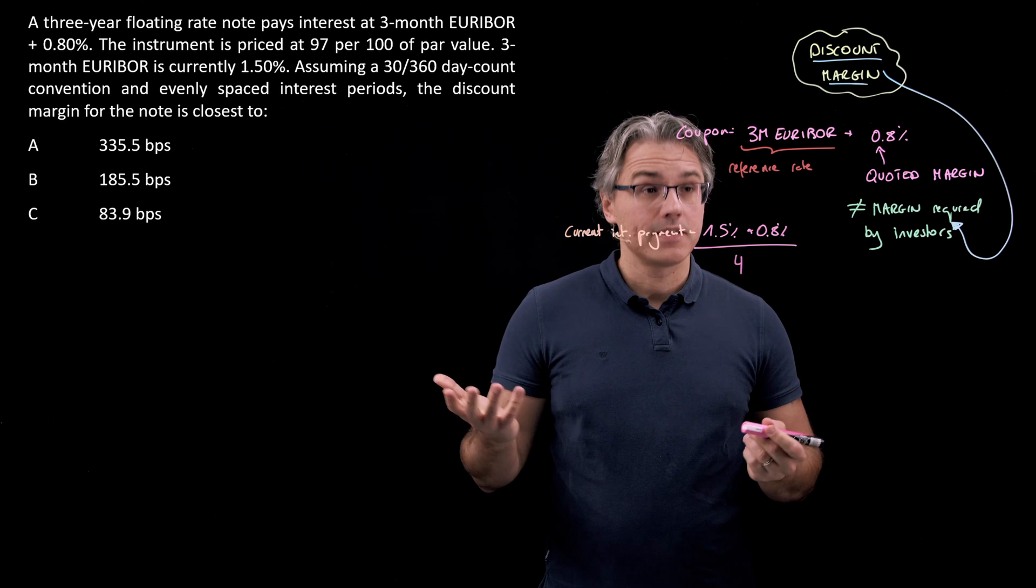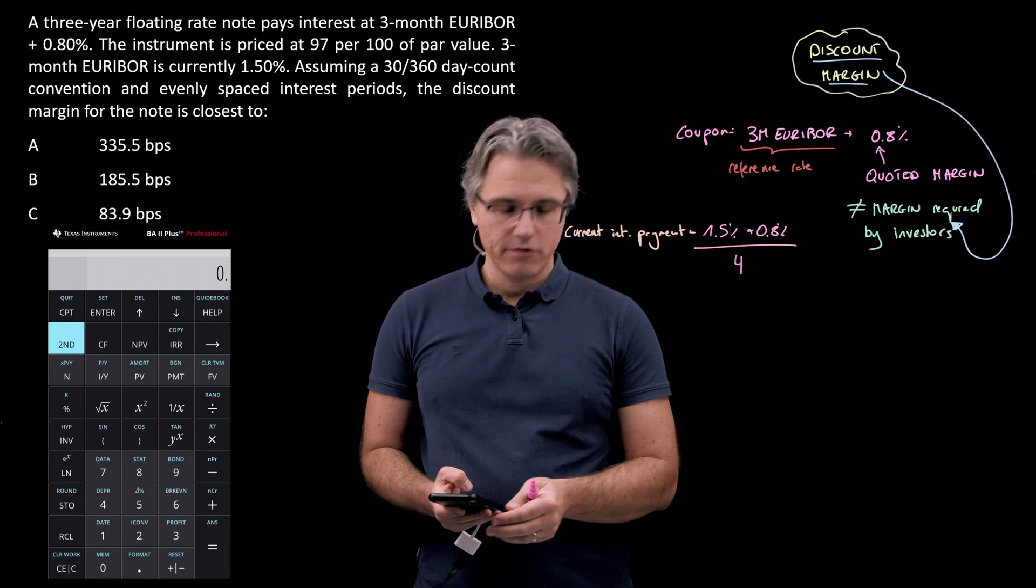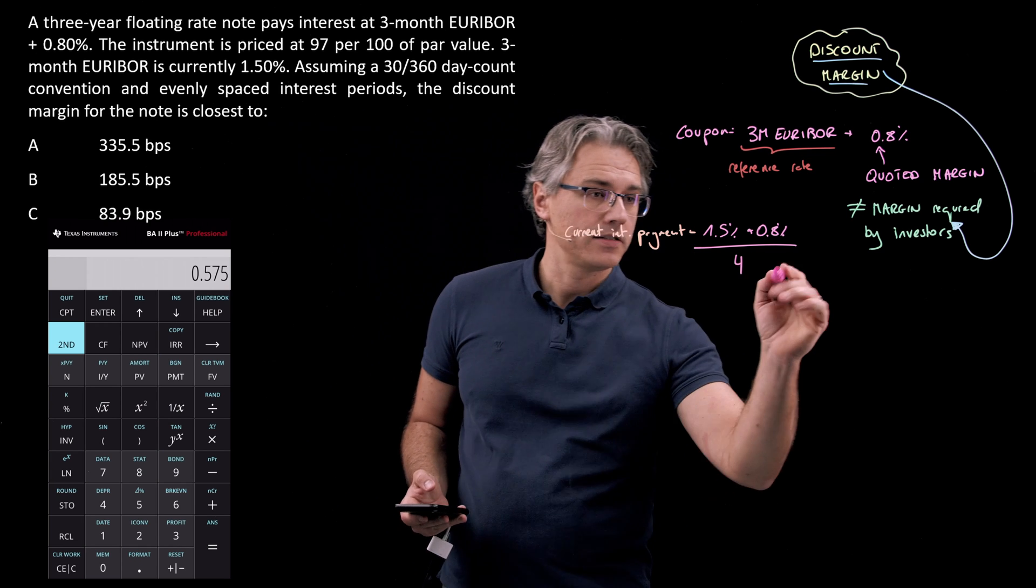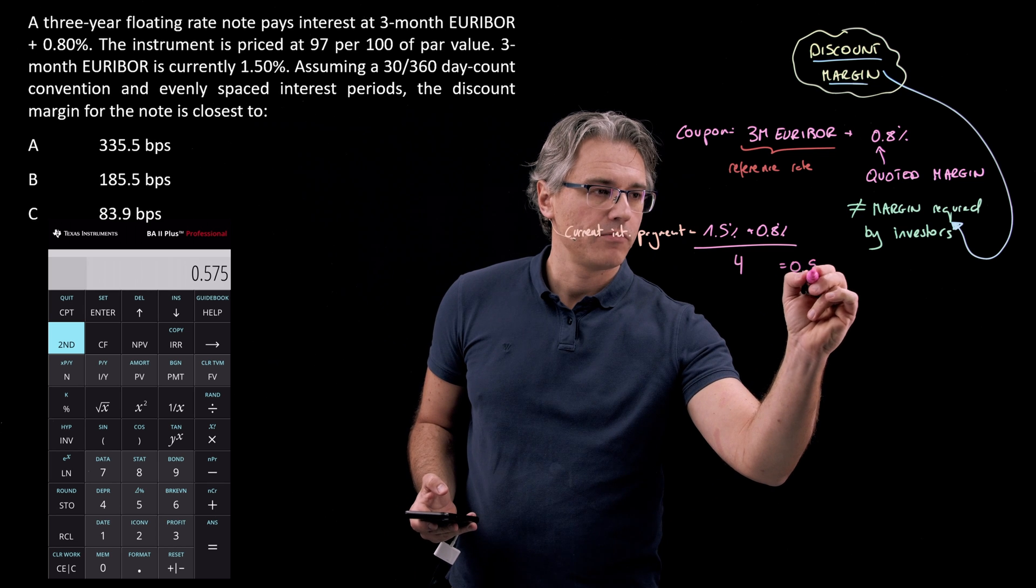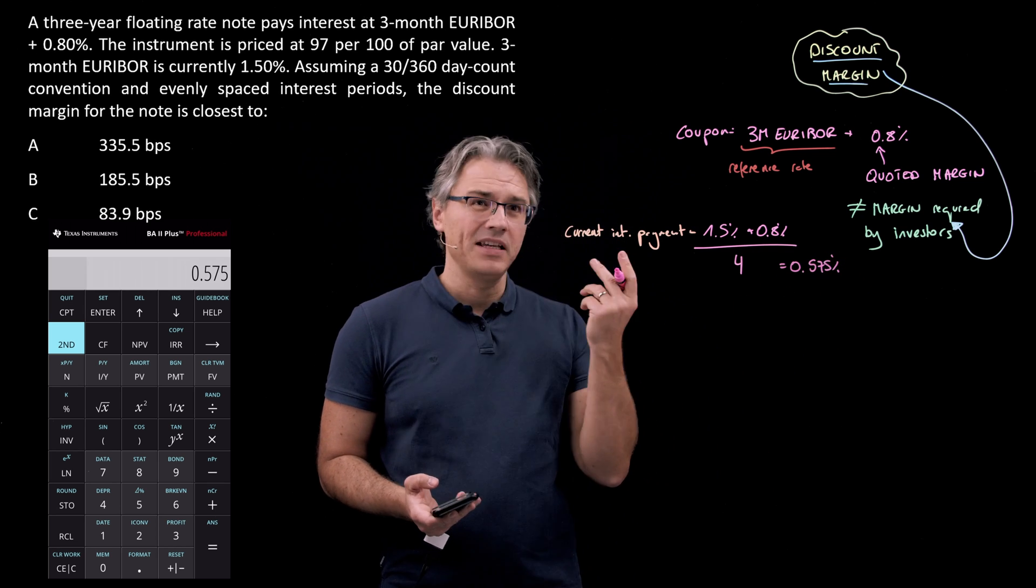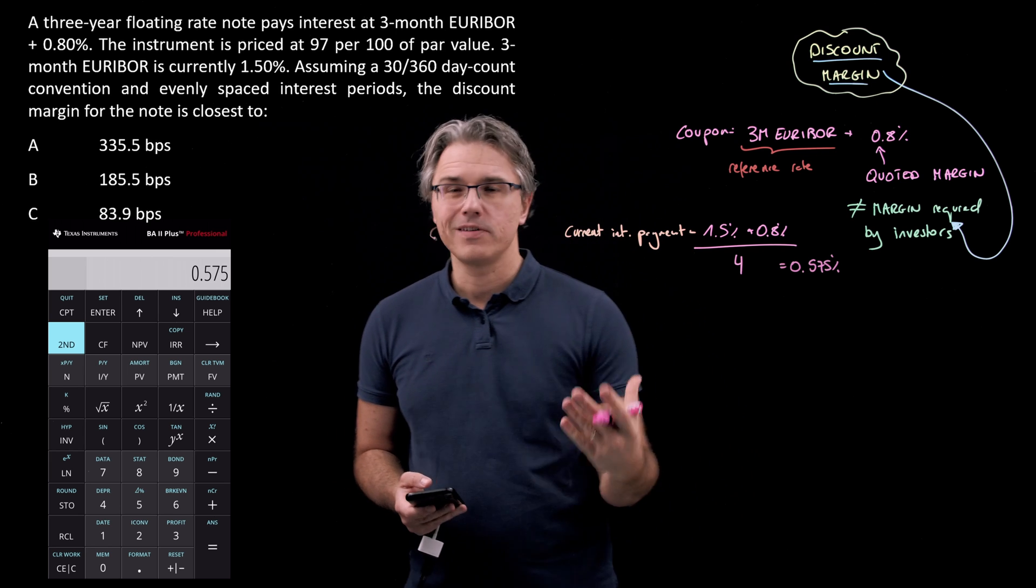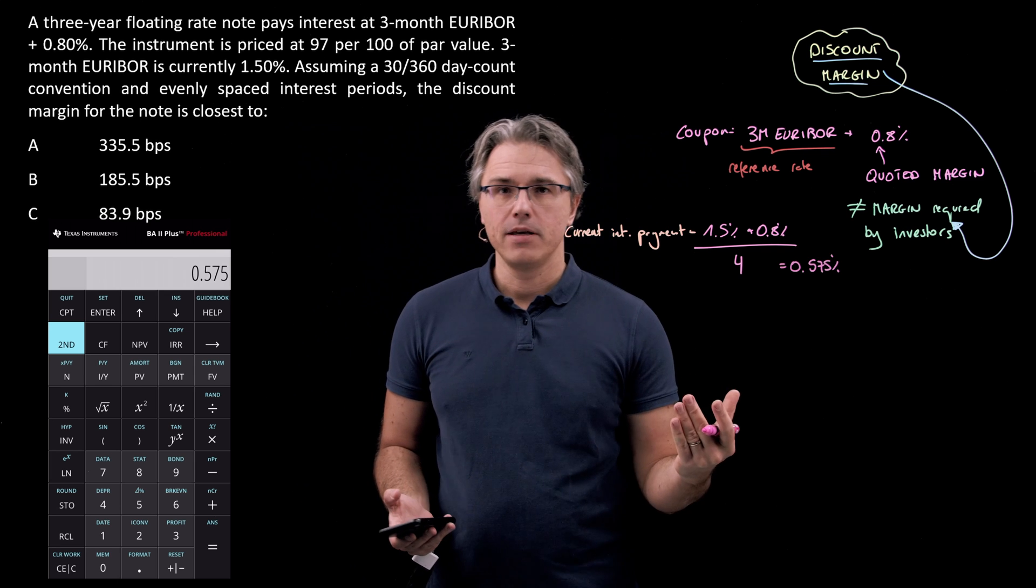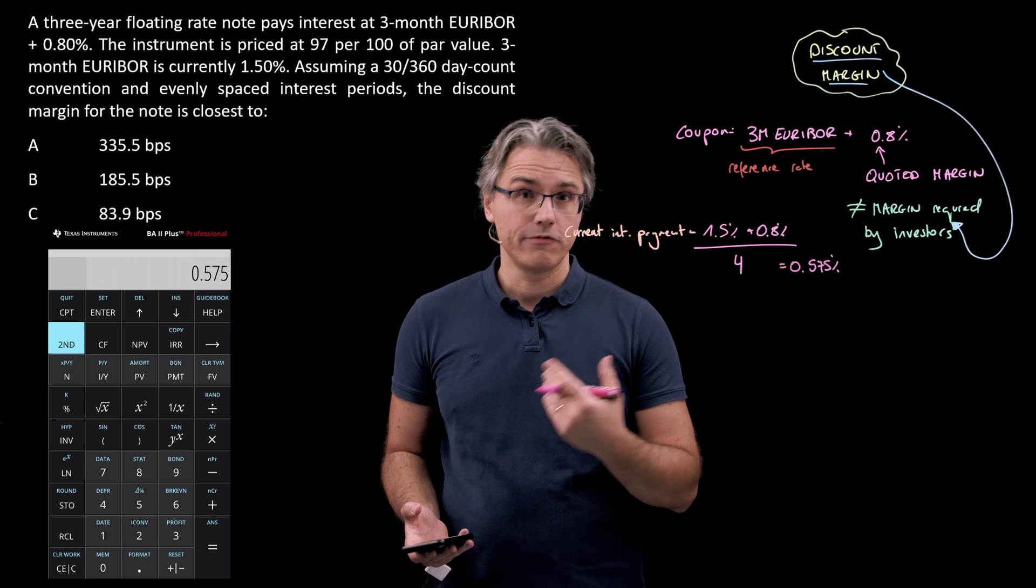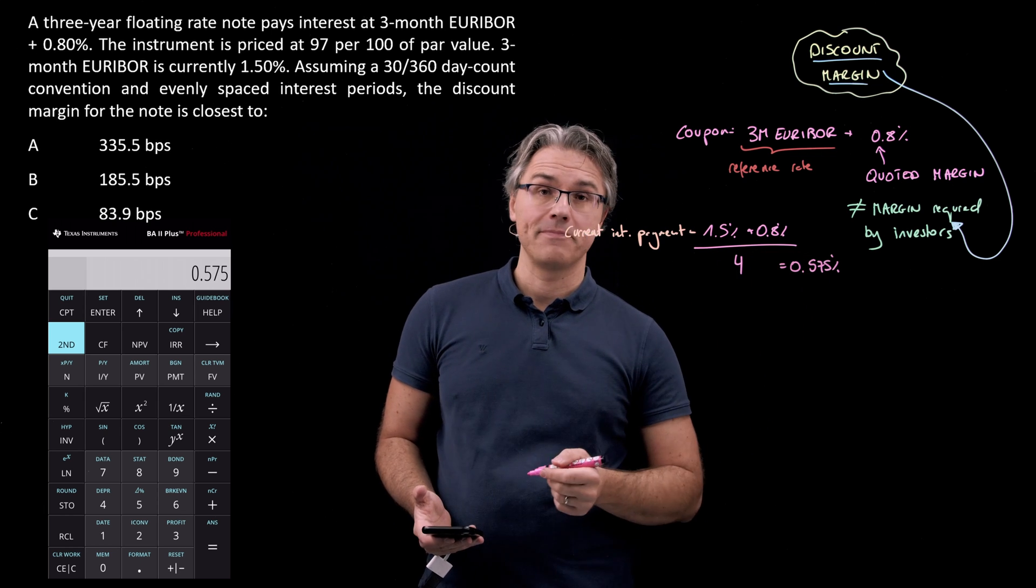Let's take the calculator out. We've got 1.5% plus 0.8%, that's 2.3%. We divide that by four to get a quarterly payment of 0.575%. In the exam, even if you're not given the frequency of payments, if something is based on a 3-month reference rate, assume quarterly frequency—four times a year. This is on a per quarter basis.